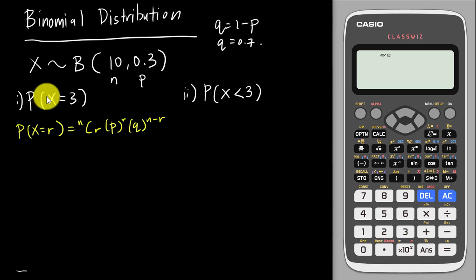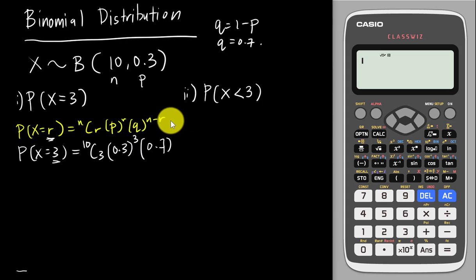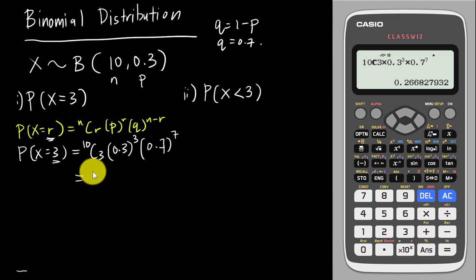For P(X = 3), r is 3 and n is 10, so it's 10C3 × 0.3^3 × 0.7^7. Typing this into the calculator — 10C3 (C is above the divide button), multiplied by 0.3 to the power of 3, multiplied by 0.7 to the power of 7 — gives the answer 0.2668.